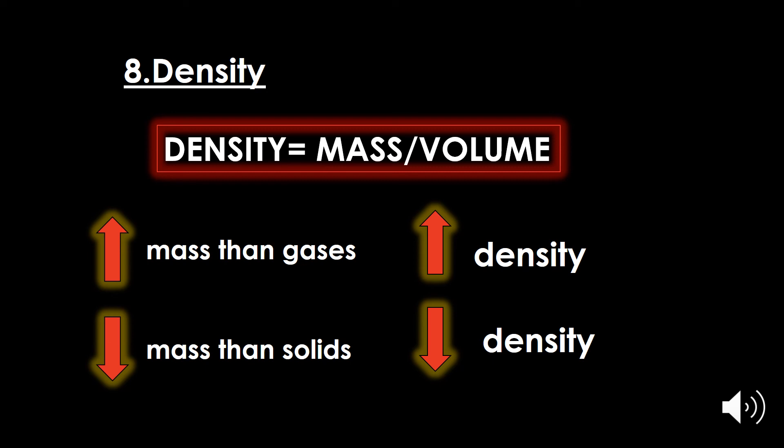The eighth property of liquids is density. The density of liquids is more than gases due to greater mass and less volume, whereas the density of liquids is less than solids. Density equals mass over volume, so density increases with increasing mass and decreases with increasing volume. Density is directly proportional to mass and inversely proportional to volume.